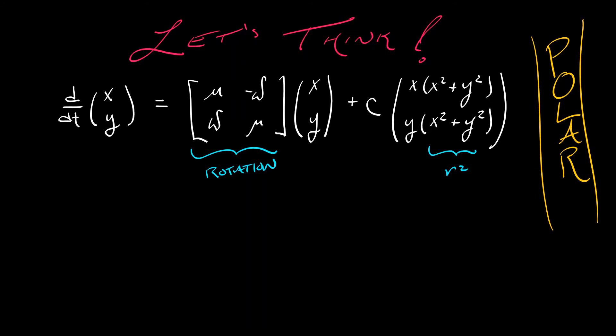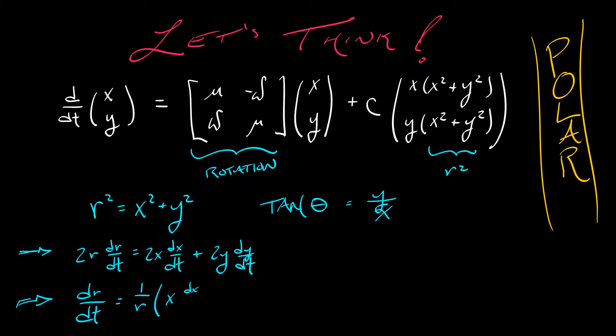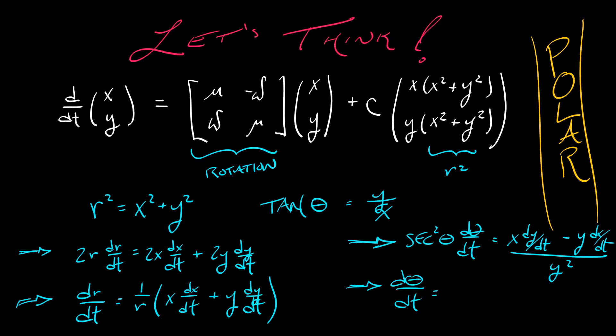Now, how do we do that? Well, if we write out the relations for polar coordinates, that is, r squared equals x squared plus y squared, and tangent of theta equals y over x, then if we apply implicit differentiation to both of these, and that takes a little bit of work differentiating, expanding things out, then what we can do in the end is write this as a system where instead of dx dt, dy dt, we have dr dt and d theta dt. That's what we want.